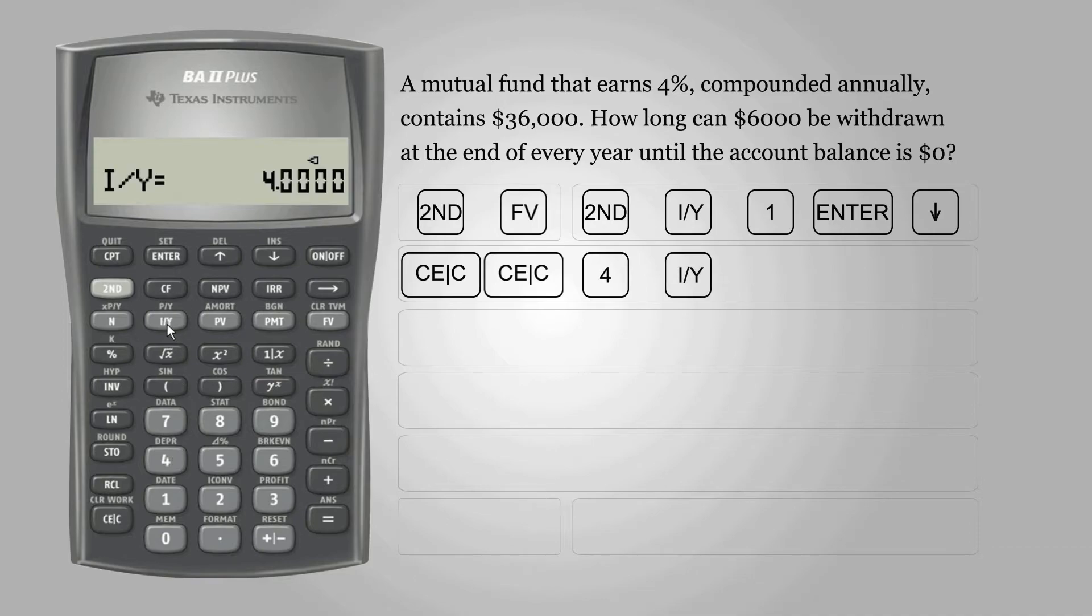For present value, enter 36,000. A negative sign to represent the money that is invested, followed by PV for present value.